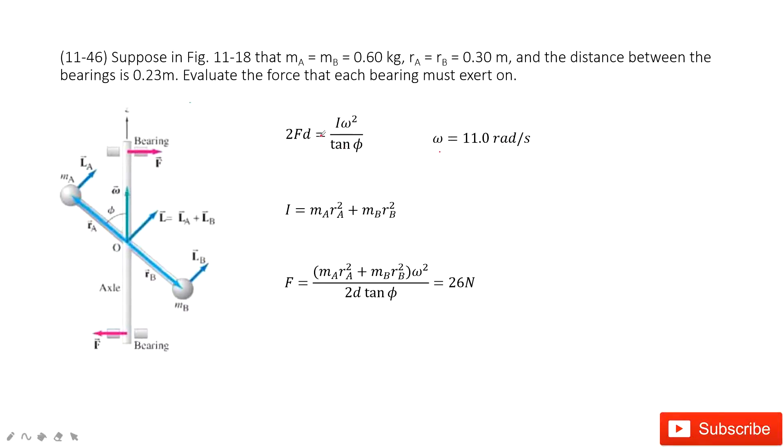And then we can see this is the net torque. The net torque equals 2 times F times D. You can see D is given as 0.23 meters.